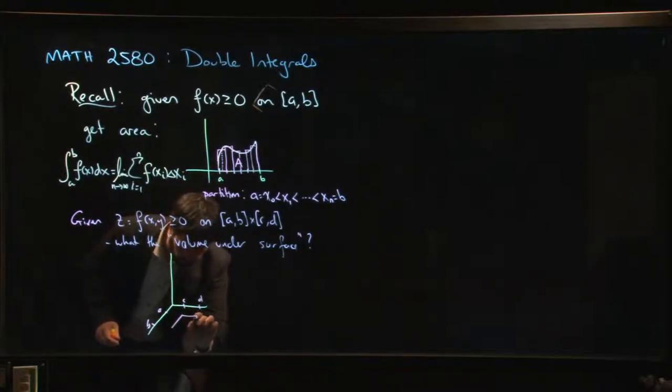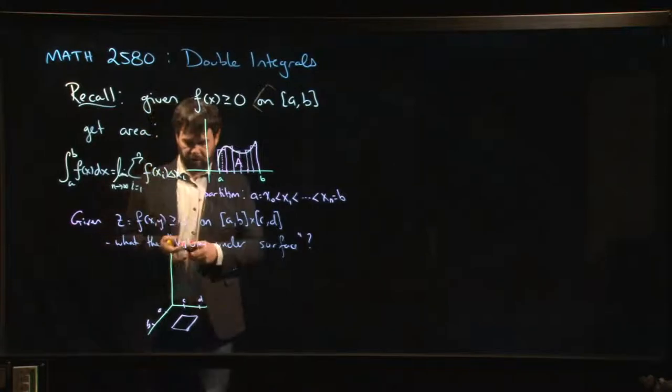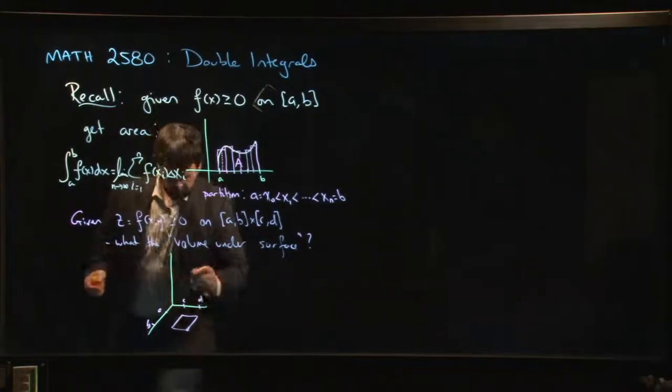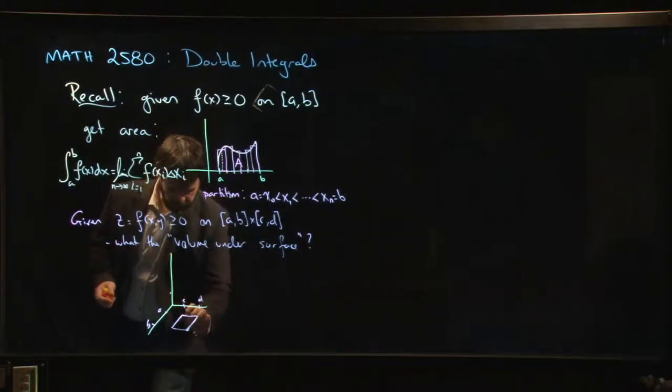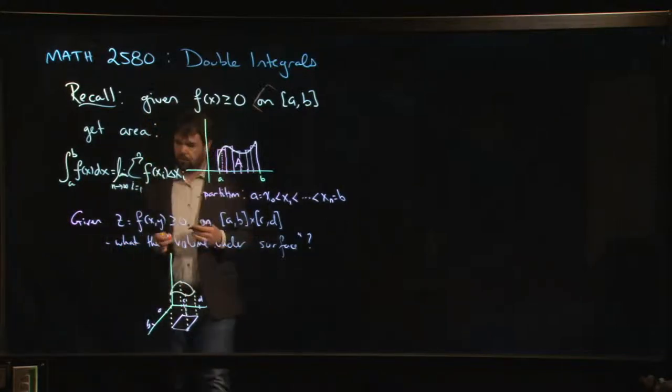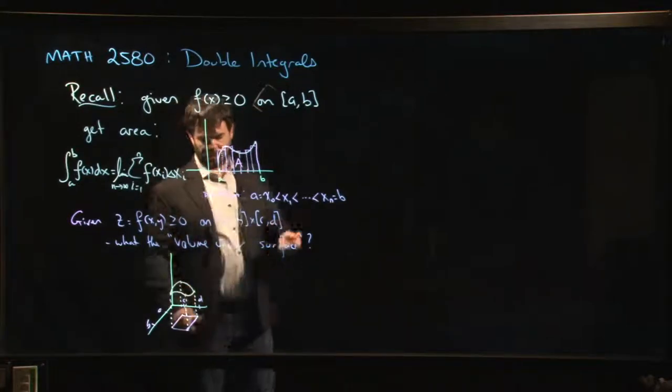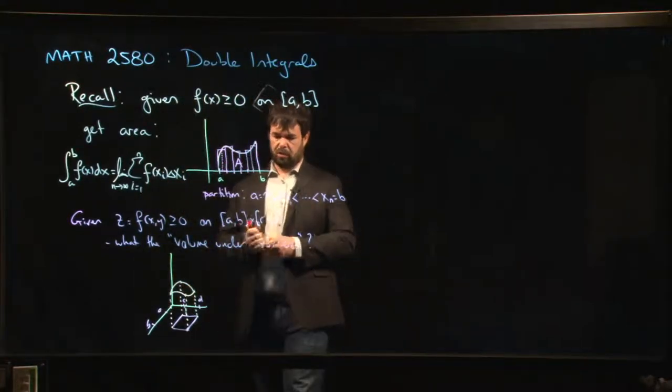So we get our little rectangle, right? And then we've got our function, our graph, the graph of the function while it's sitting over this rectangle. So maybe you have something that looks like this. Okay, there's your surface. So you can at least sort of picture, make some, get some idea of what we mean by volume under a surface here.